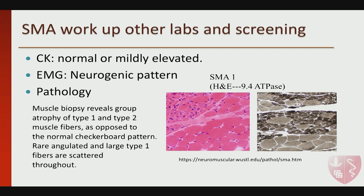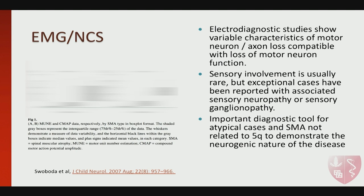SMA type 3 patients can sometimes look like Duchenne muscular dystrophy or limb-girdle muscular dystrophy. CK is not uncommonly mildly elevated — usually in the hundreds, not thousands as with muscular dystrophies — but this can be confusing. In the era of genetic panels, if a limb-girdle panel doesn't include SMA, the diagnosis could be missed. EMG and muscle biopsy are rarely done nowadays. When electrodiagnostic studies are performed, they show variable characteristics of motor axon loss compatible with motor neuron loss. Rarely, especially in type 0 patients, a sensory neuronopathy or ganglionopathy component can be identified.